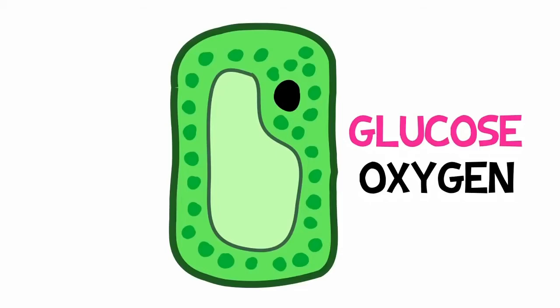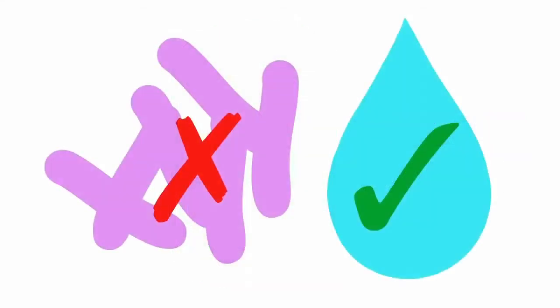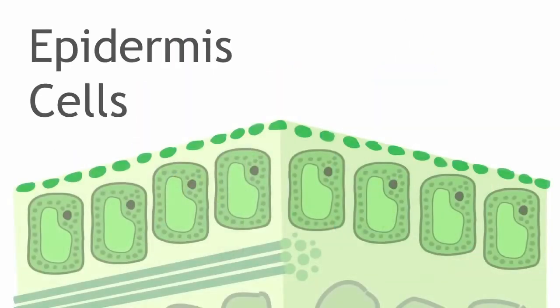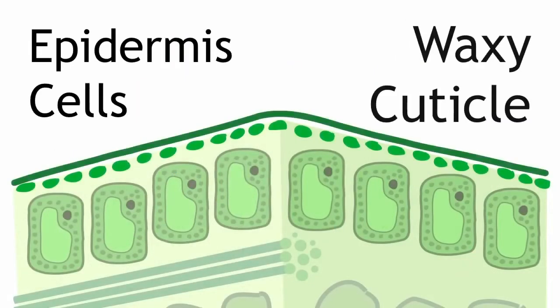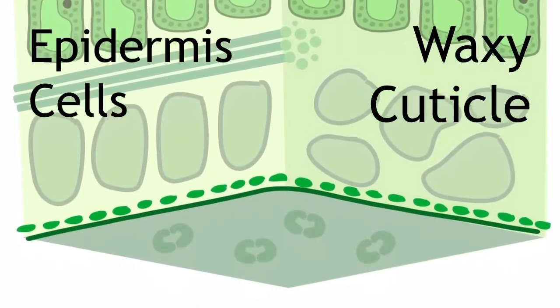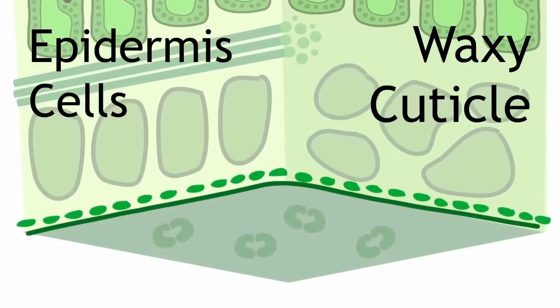But how does the leaf prevent unwanted intruders like bacteria from getting in and stop important reactants from escaping? Above the palisade mesophyll and below the spongy mesophyll are epidermis cells, which produce a waxy coating called the cuticle. The cuticle seals up the leaf so that the only way in and out is through the stomata, which are regulated by those guard cells.